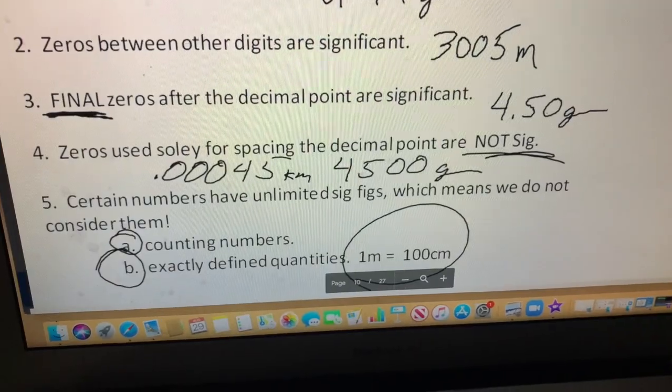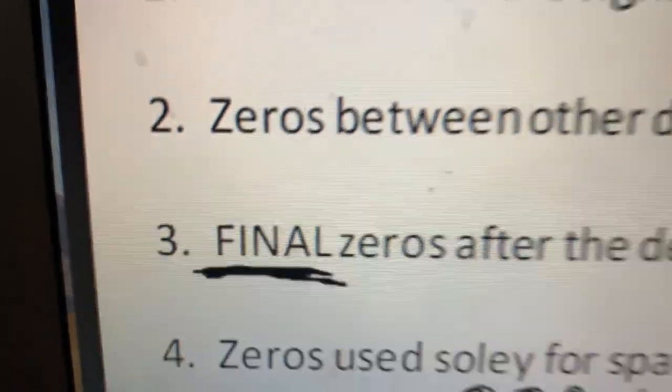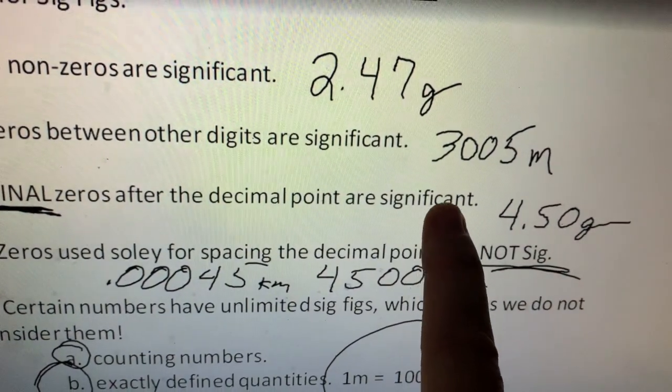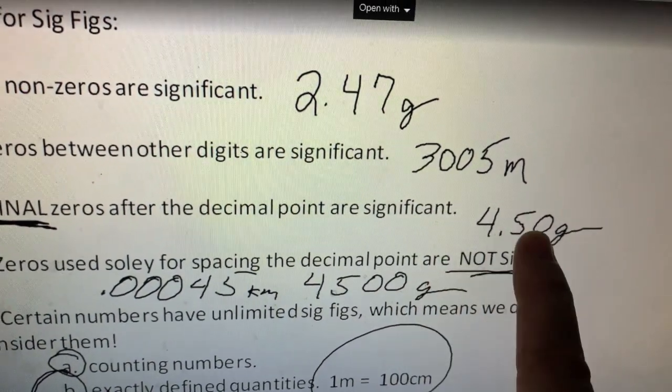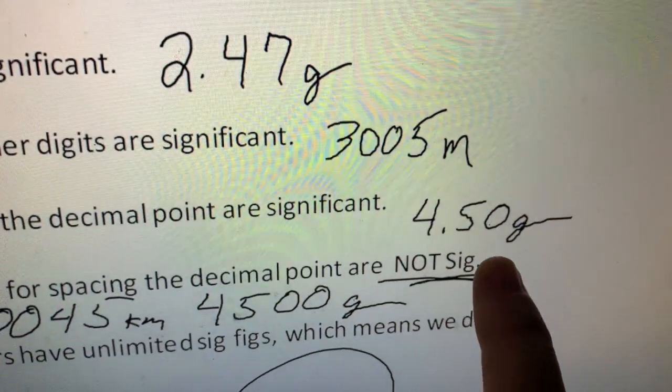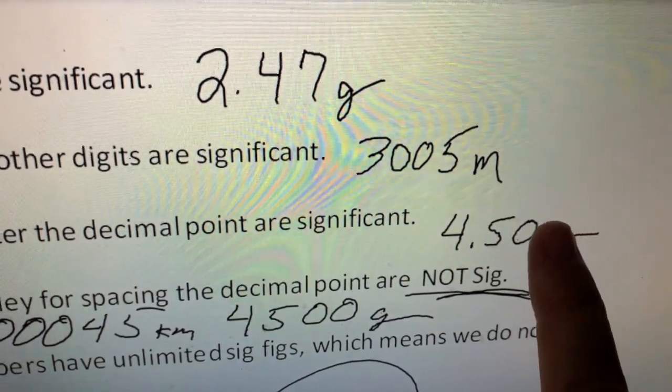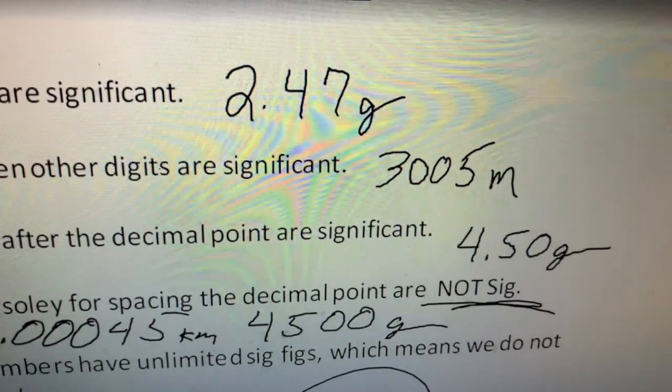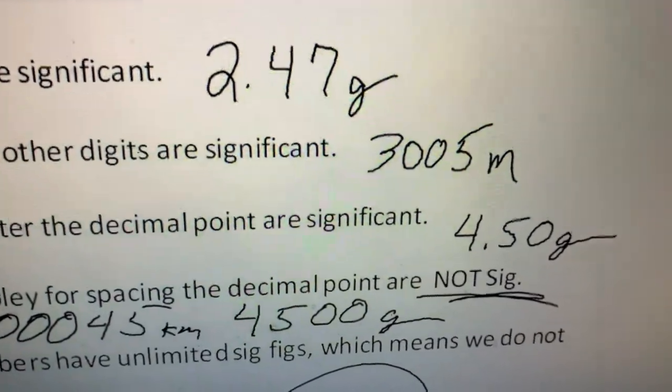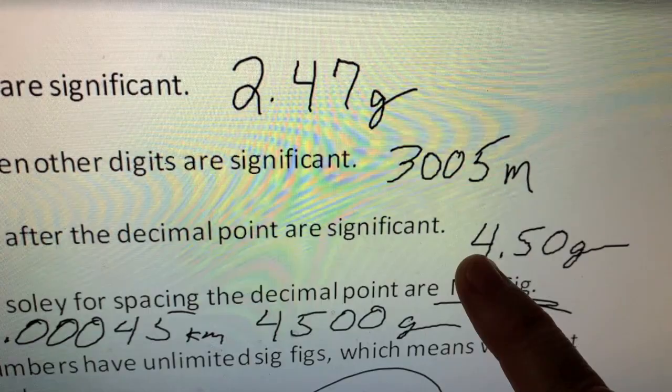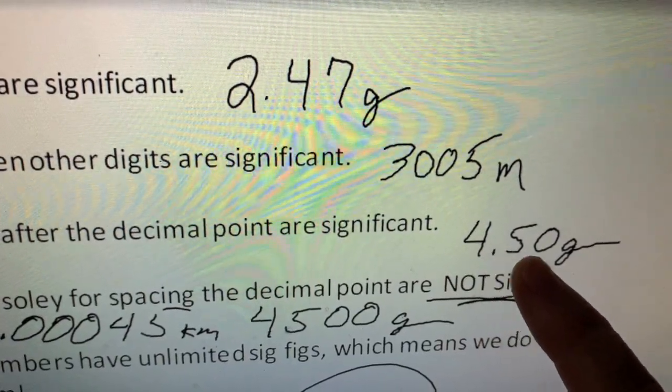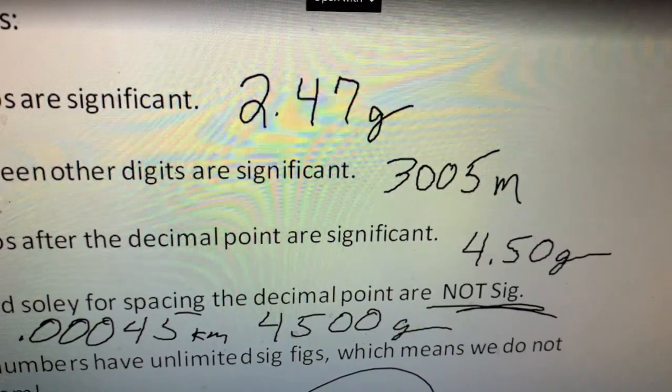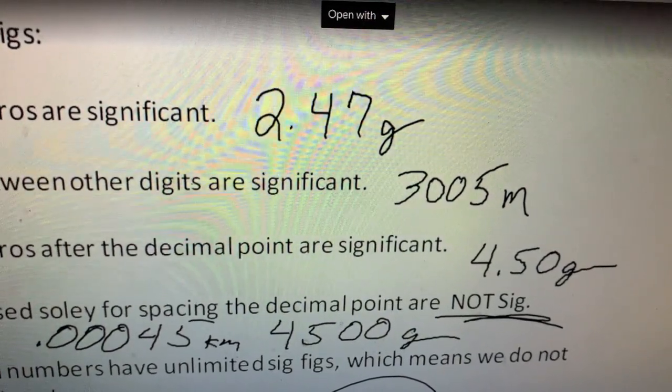Now final zeros, final zeros after the decimal point are also part of your measurement. They are significant. So let's take a look at this 4.50 grams. Well we know mathematically there's no difference between 4.5 and 4.50. So why is that zero there? It's there to tell you that the instrument told you the 4, told you the 5, and that zero is an estimated digit. So you would say that that value has three significant figures.